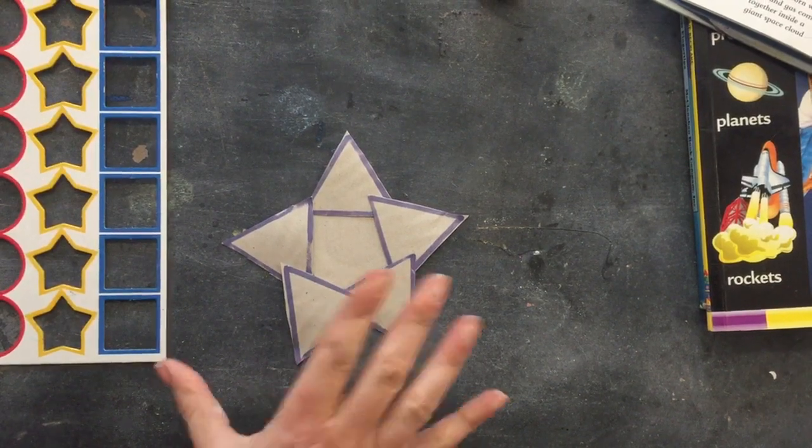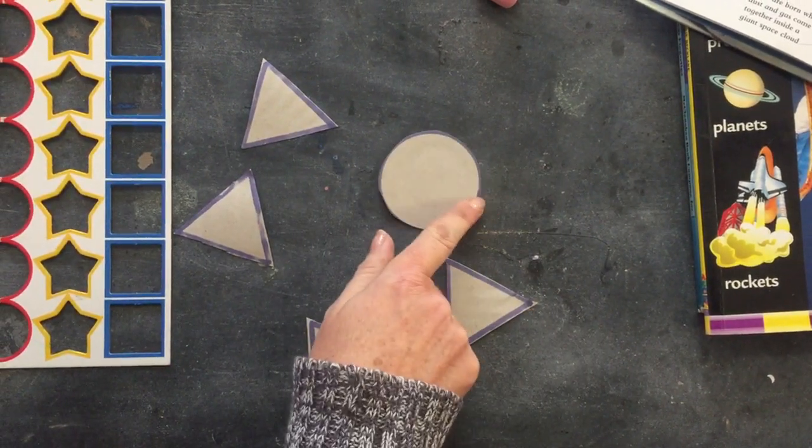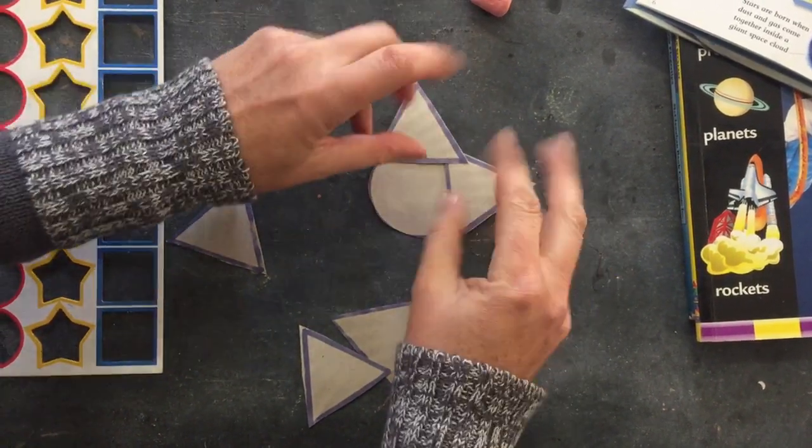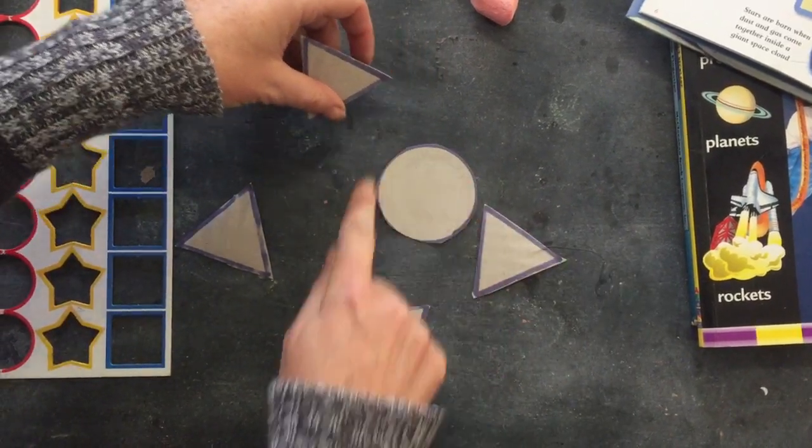But actually, a star is a circle. The shape of a star is a circle. It just looks like a star shape because it twinkles in the sky. But actually, stars are circles.